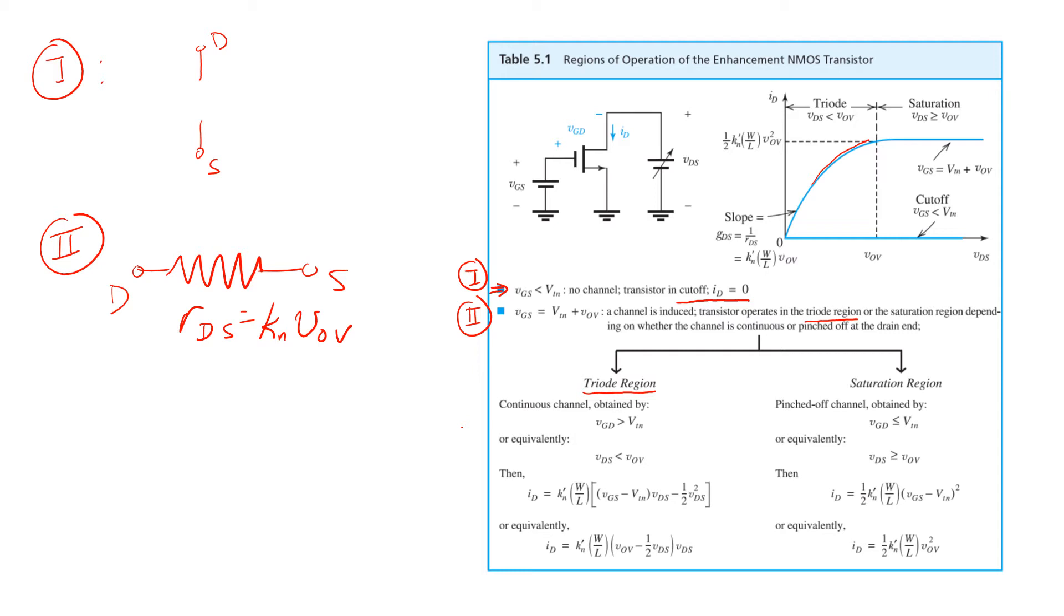Finally, the third operating mode we considered is saturation. Saturation arises when, again, VGS exceeds the threshold voltage, but when VDS is greater than the overdrive voltage.